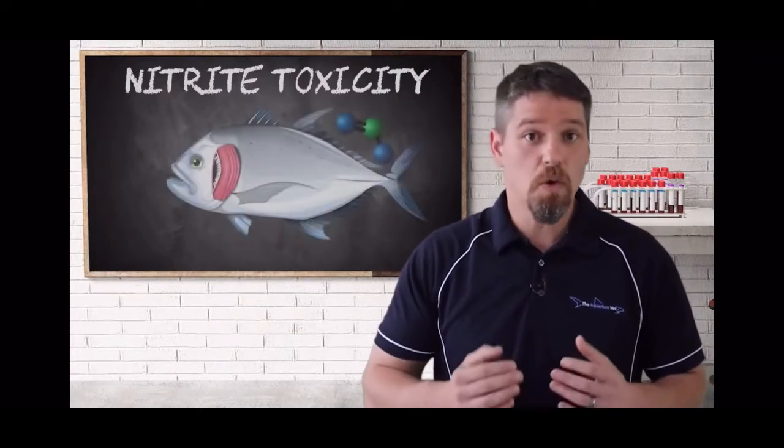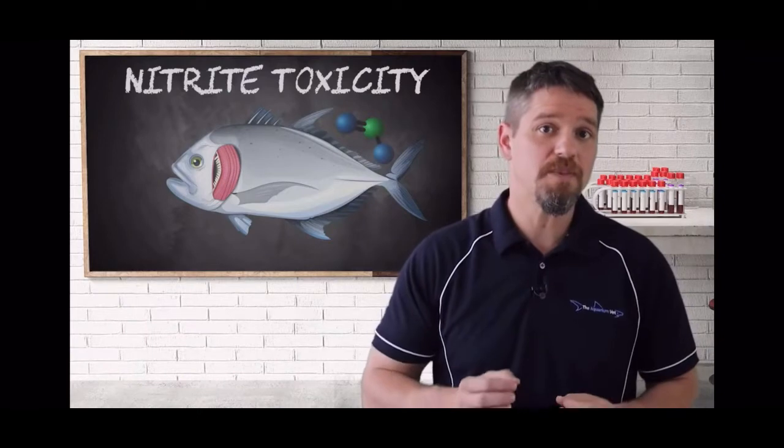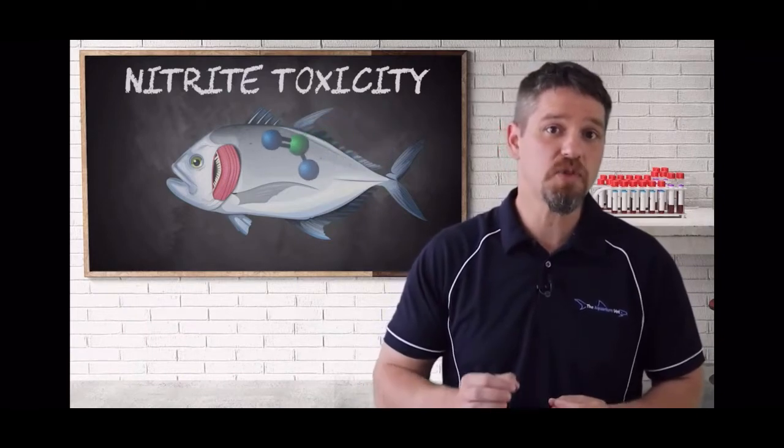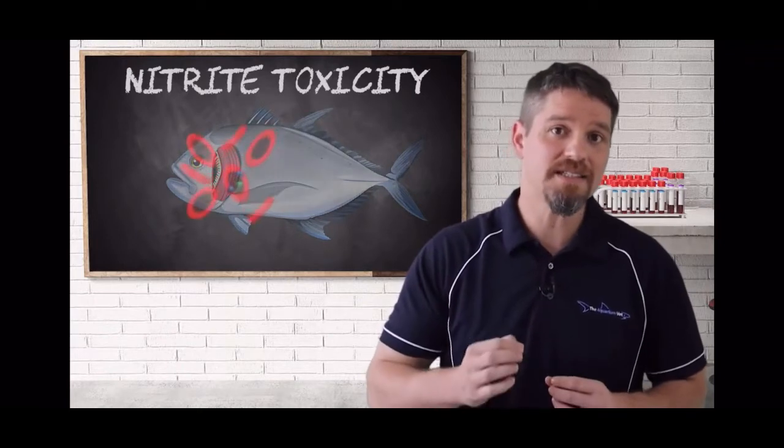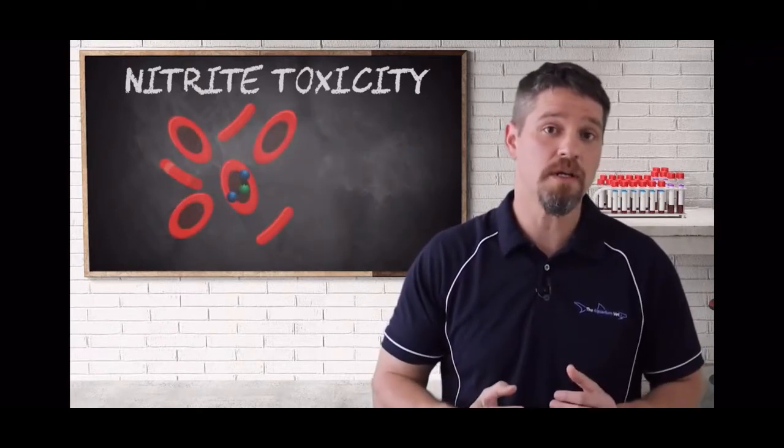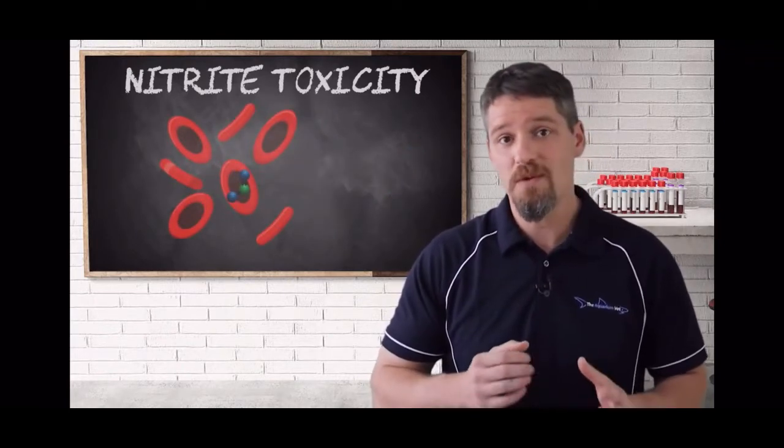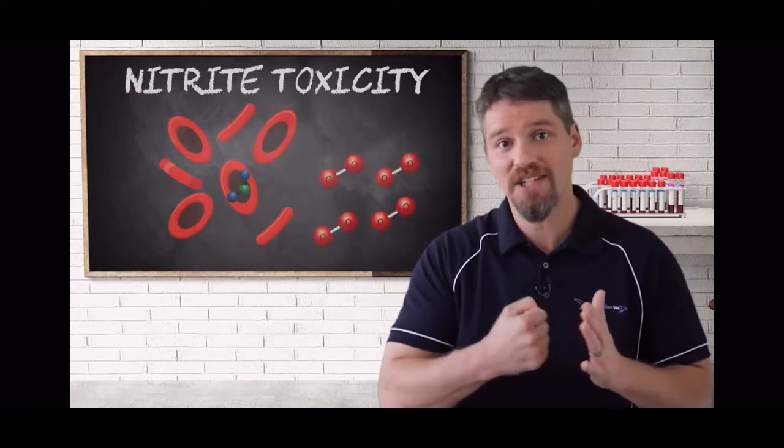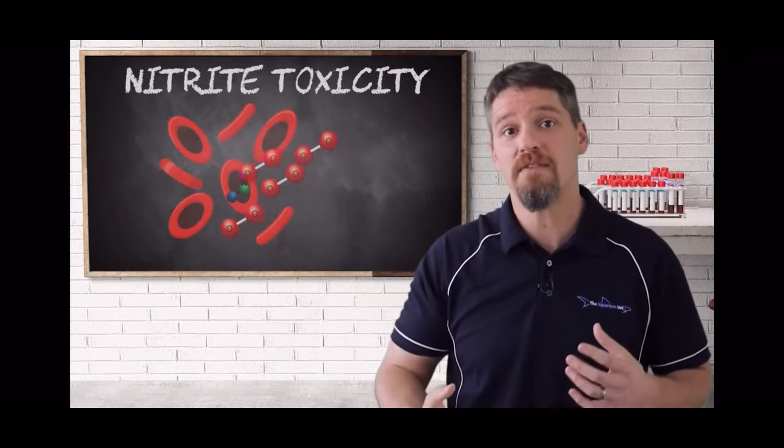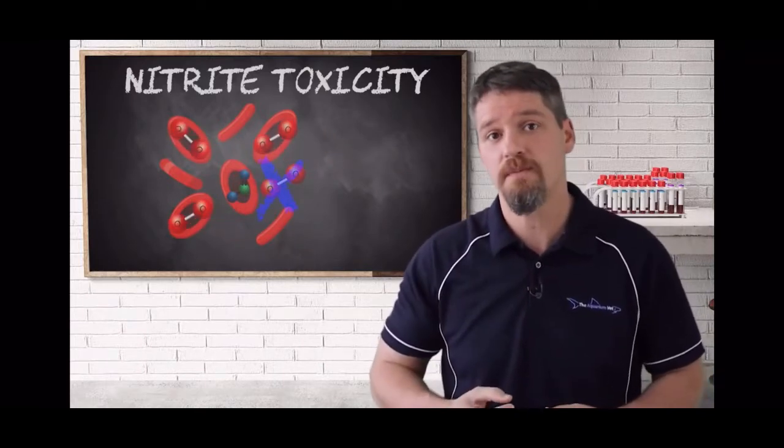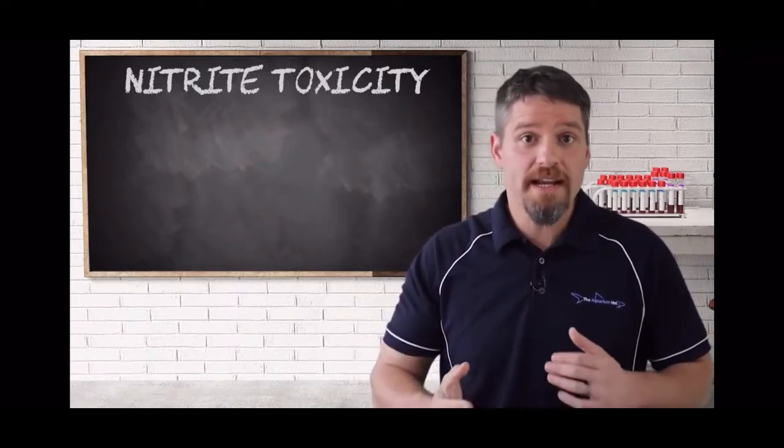The etiology or reason why this occurs is because the nitrite is readily absorbed through the gills into the bloodstream. It then oxidizes the iron within the hemoglobin of the fish's red blood cells, and when this occurs oxygen cannot actually efficiently bind to the hemoglobin, reducing the amount of oxygen that's available to the fish.